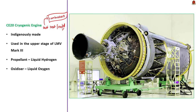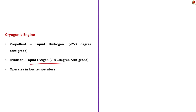CE20 is the indigenously developed cryogenic engine used in LVM Mark III. LVM3 has three stages: a solid first stage, a liquid second stage, and a cryogenic third stage. CE20 is used in the upper (cryogenic) stage. A cryogenic engine uses liquid hydrogen as propellant and liquid oxygen as oxidizer. Oxygen liquefies at minus 183 degrees Celsius, while hydrogen exists in liquid form below minus 253 degrees Celsius. Since these engines operate at such extremely low temperatures, they are called cryogenic engines — cryogenic being the science of extremely low temperatures.